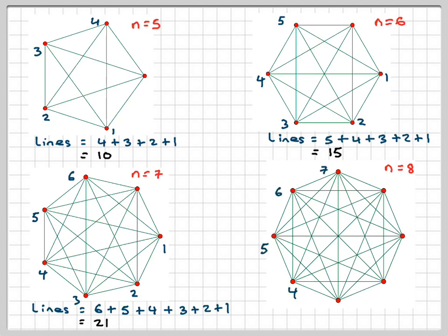seven, six, five, four, three, two. So when N equals 8, just adding 7 to 21, we're going to get 28 lines. And that was given in the question.